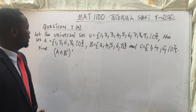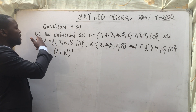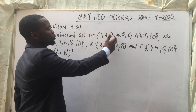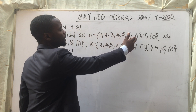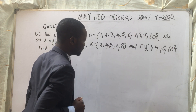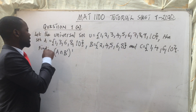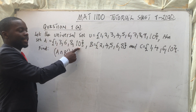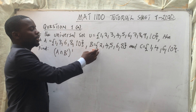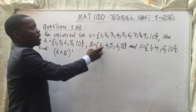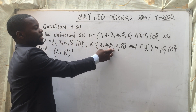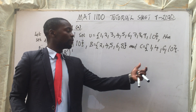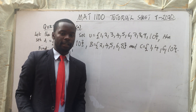The question is: let the universal set U be {1, 2, 3, 4, 5, 6, 7, 8, 9, 10}. The set A is {1, 3, 6, 8, 10}. The set B is {2, 4, 5, 6, 7, 8}. And then the set C, we have {1, 4, 6, 10}.